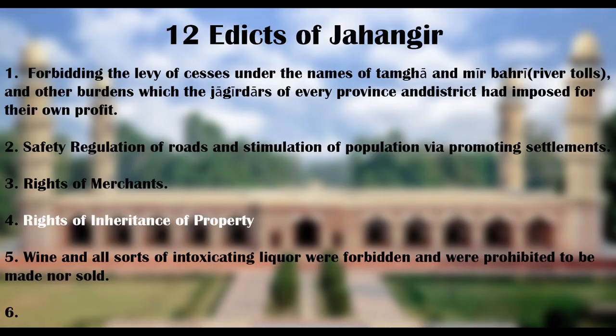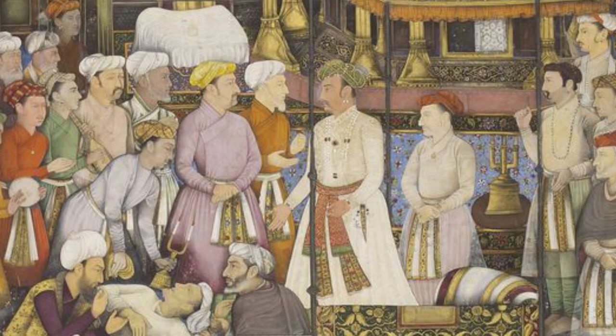6. Prohibition of Seizing Houses. This order was issued by Jahangir to keep any individual authority from taking possession of any person's house. No one was permitted to take up one's abode in the dwelling of another.